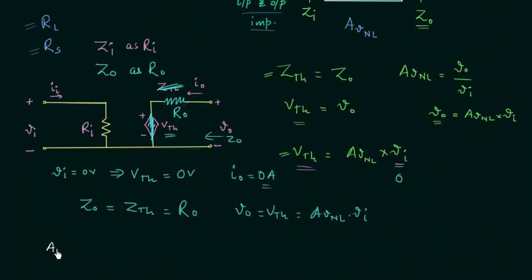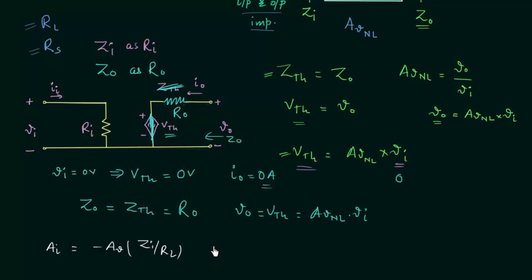Now let's talk about the current gain AI. Calculating current gain is straightforward — you can use the formula AI equals minus AV multiplied by the input impedance divided by the load resistance, where AV is the voltage gain. You can use this formula every time to calculate current gain. This concludes this lecture. In the next lecture we will analyze this circuit with load resistance RL connected and observe the effect of load resistance.